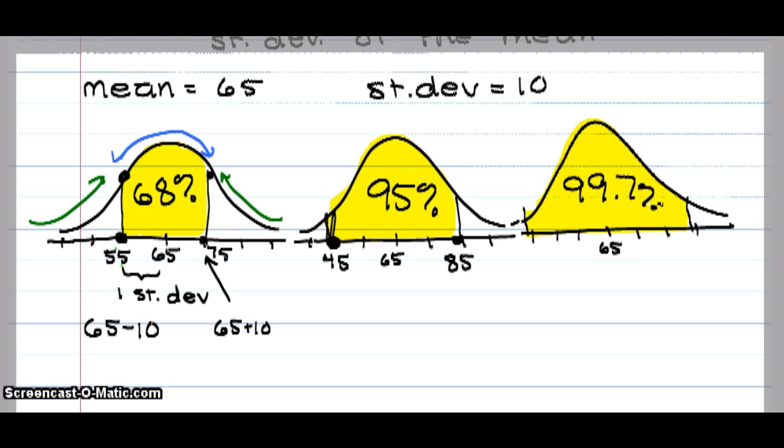What does that mean? Well, three standard deviations down puts me at 35. Three standard deviations up puts me at 95.